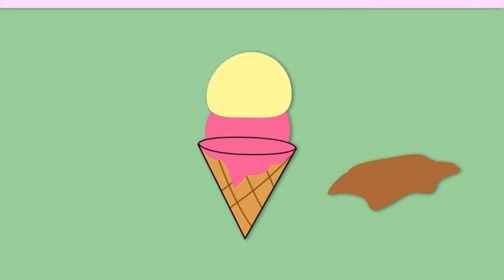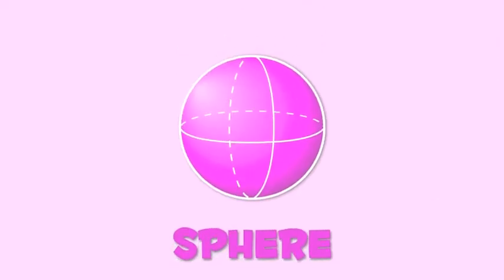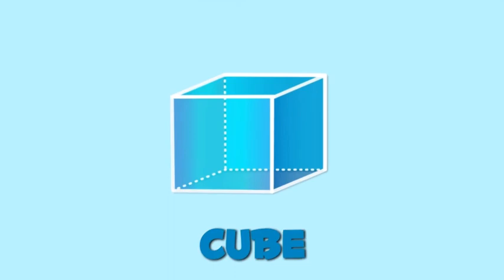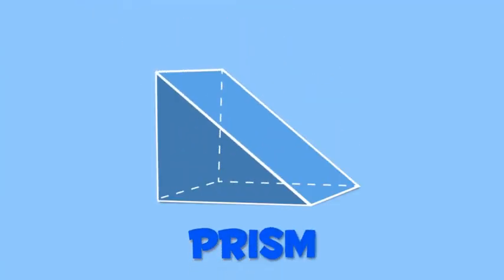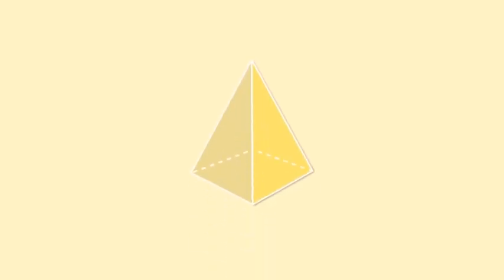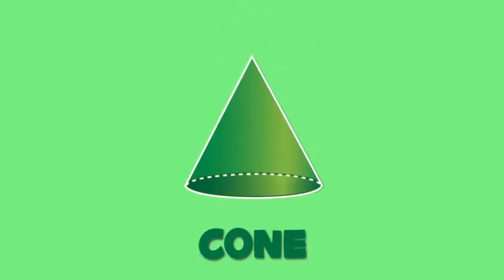Oopsie! Well done! Let's recap all geometric shapes. Sphere, Cube, Cylinder, Prism, Pyramid, Cone. Now you know everything about geometric shapes. Way to go!